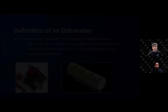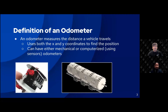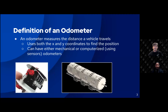What is an odometer? An odometer is a mechanism that measures the distance a vehicle travels. Using both the x and y coordinates, a vehicle is able to find the position it is at. It can either be mechanical or computerized, and below are two examples of mechanized odometers.